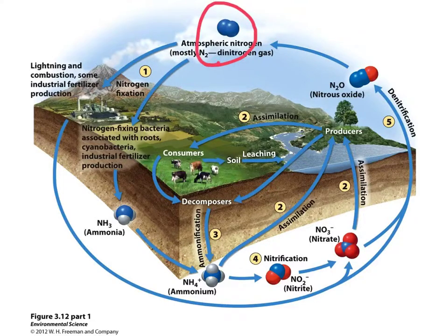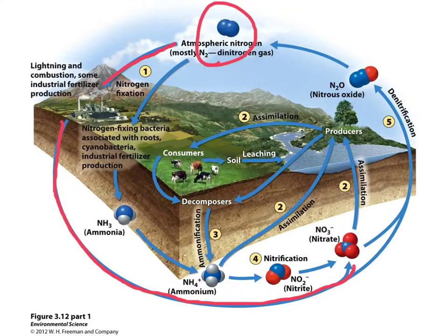Nitrogen gas can be fixed directly in the atmosphere. This can happen a couple of ways — one of them is lightning, and it can also happen due to combustion processes like fires or burning fossil fuels. That's represented here with this arrow that I'm coloring in red. With the presence of lightning or combustion processes, nitrogen gas gets turned into nitrate — something that plants can actually absorb. The take-up of nitrogen by plants is called assimilation.